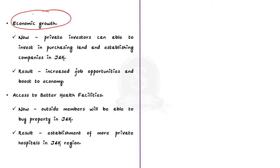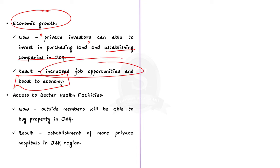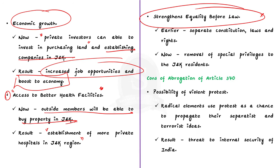Thirdly, this abrogation aids in the economic growth of the state. Private investors can now invest in purchasing lands and establishing companies in the state, increasing job opportunities and boosting the economy. Fourthly, it will help J&K people get better health facilities, as more private hospitals will be built in the region due to outside investment, increasing the availability of better healthcare. Finally, this abrogation strengthens the fundamental principle of equality before law. Before abrogation, J&K had a separate constitution with separate laws and rights, defeating the principle of equality. Now, the rights of J&K citizens will be equal to the rest of Indians, removing special privileges and ensuring greater national integration.